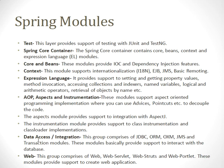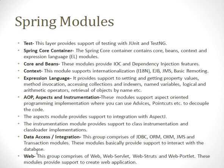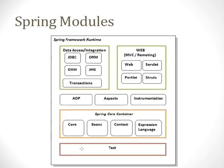The Data Access and Integration group comprises JDBC, ORM, OXM, JMS, and the Transaction module — this layer is related to accessing databases. The Web group comprises Web, Web Servlet, Web Struts, and Web Portlet modules, providing support to create web applications. These are the Spring framework layers and components working layer-wise.